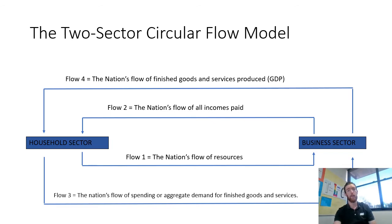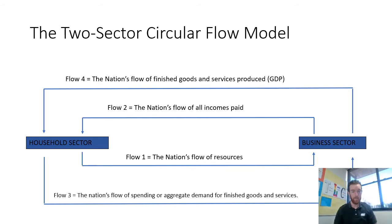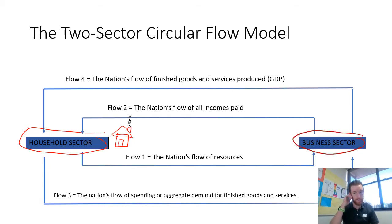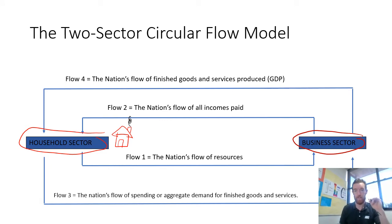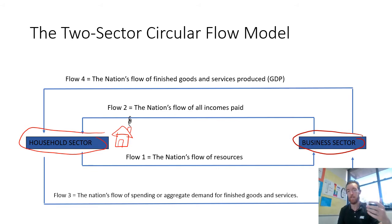Next we look at the two-sector circular flow model of the economy. The two sectors are the household sector and the business sector. These two sectors impact each other quite a lot, and the two-sector flow model is all about what households provide businesses and what businesses provide households in return. There are four flows that we look at, all equally important for understanding how economic activity happens and how money flows through the economy.